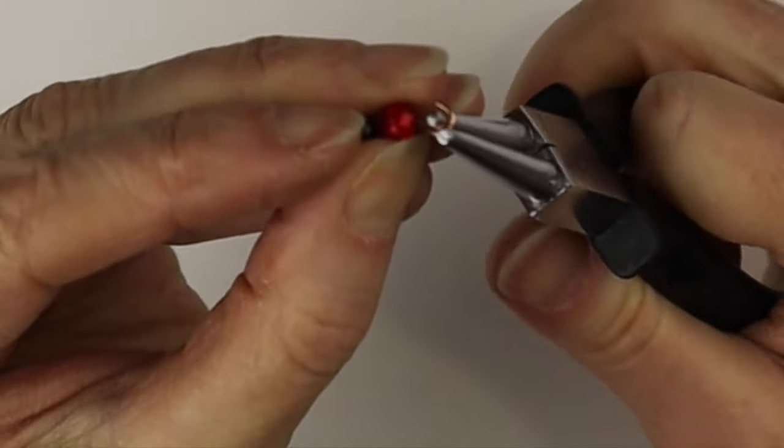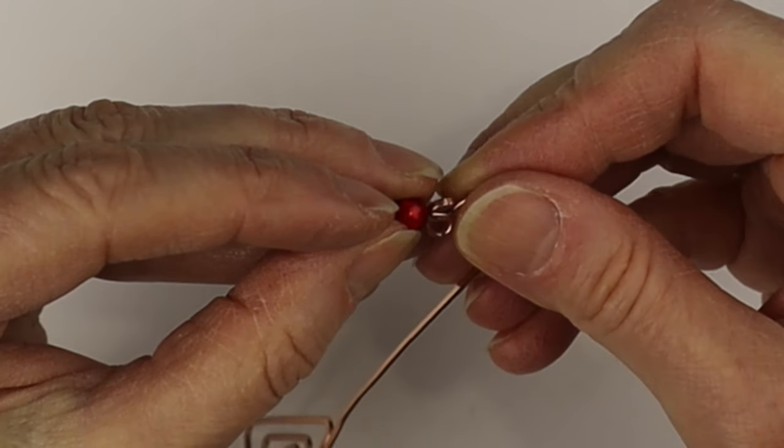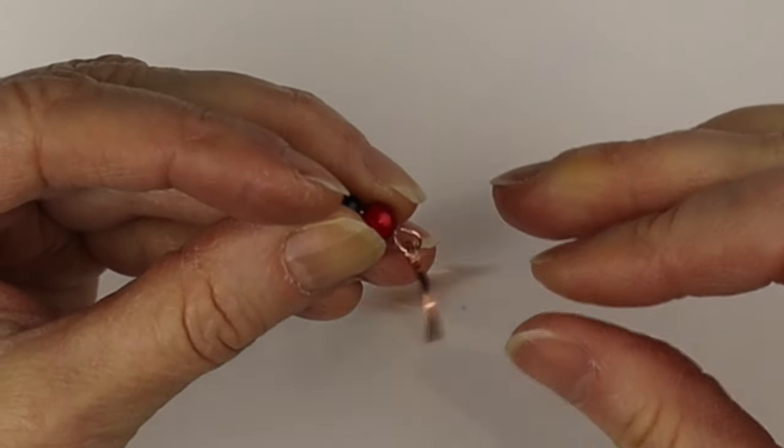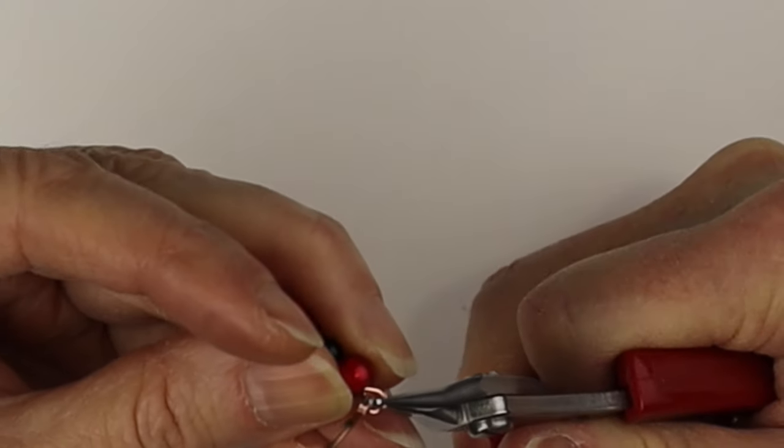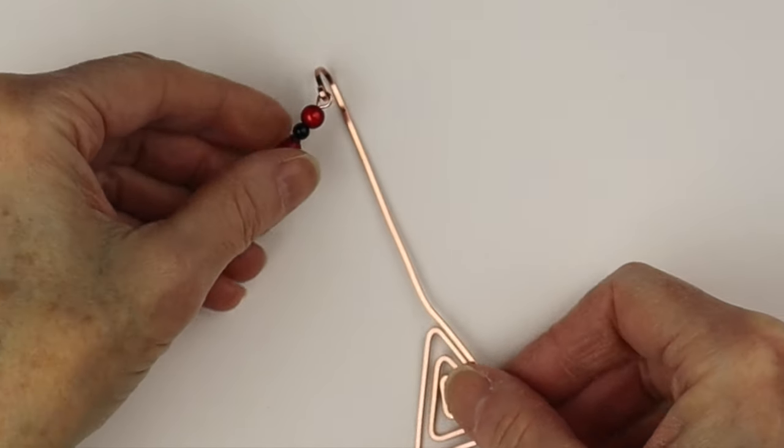Bend the wire back and around to make a loop, and then you simply dangle it on the end of the flat bookmark. Close up that loop, and this one's really cute with the ladybug bead.